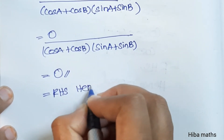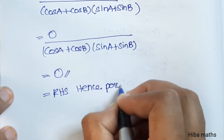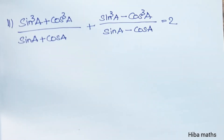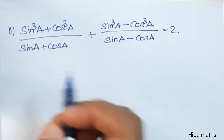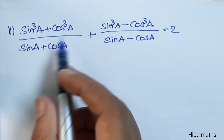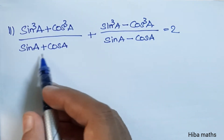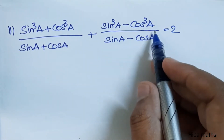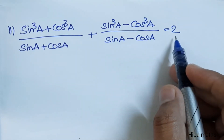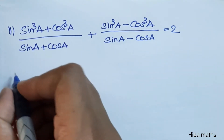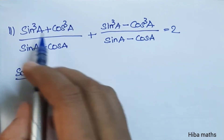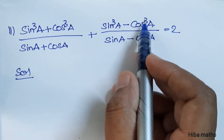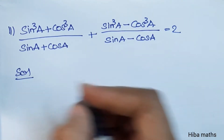Now let's try the second sub-question. It is: (sinA plus cosA) divided by (sinA minus cosA) equals 2. To solve this, we can try the a cubed plus b cubed formula and the a cubed minus b cubed formula.